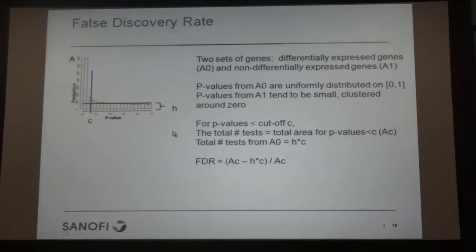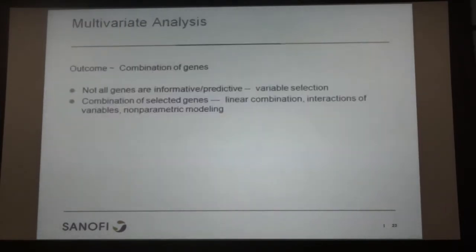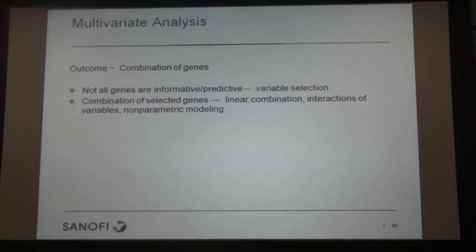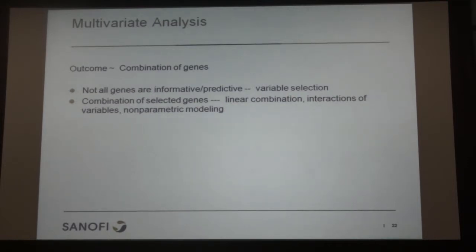Moving to multivariate analysis — we now consider combining multiple genes to predict outcomes. Not all genes are informative or predictive; in fact most are supposed not to be, for good biological reasons. So we need to do variable selection. After selecting variables, we also need to decide how to combine them: a linear combination, interactions between genes, or more complicated nonparametric modeling using trees.